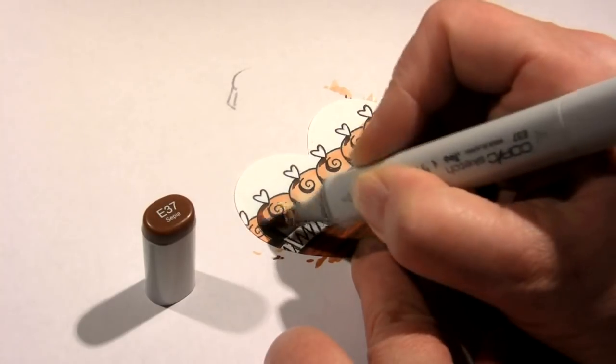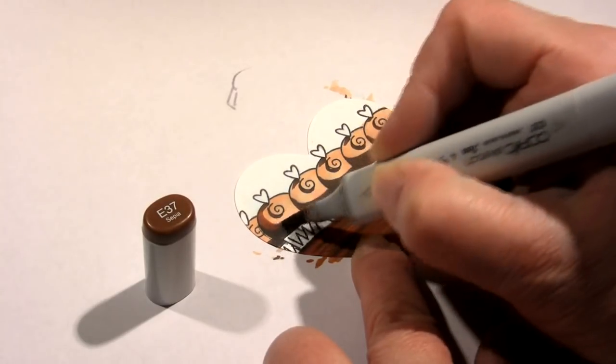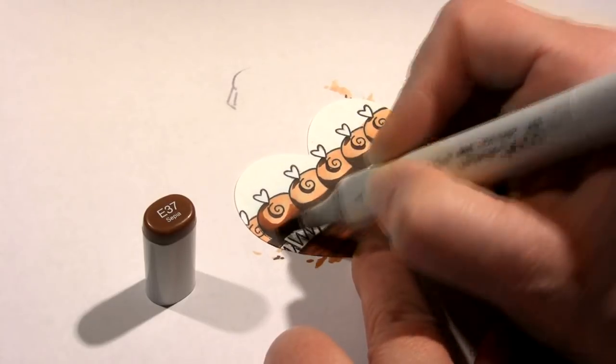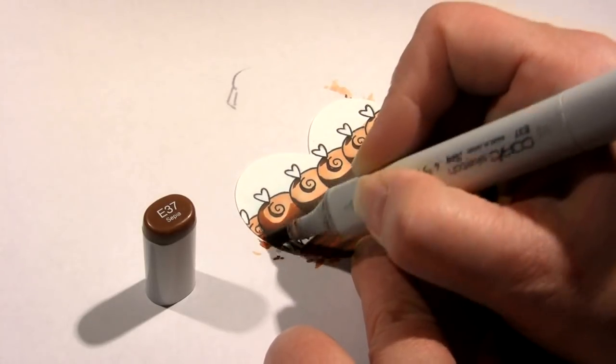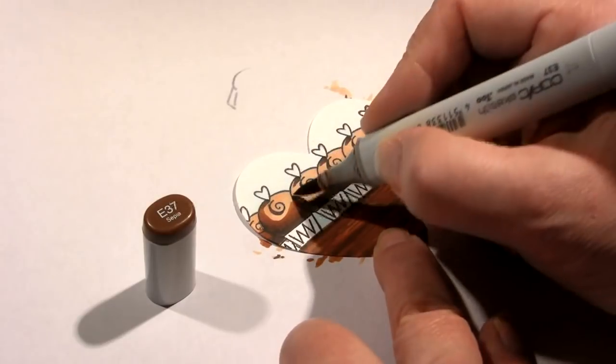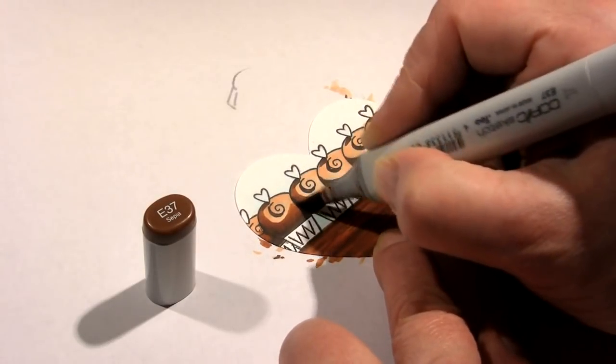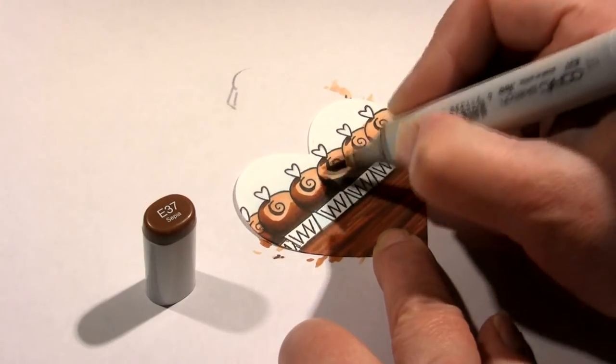E37 will be my next color, and I'm extending the shadow. I'm pulling up from where the shadow is and adding more of it into each of the truffles. I want to put enough of that color in there to make them nice and warm and chocolatey brown. This color is also going to blend and soften that E49 color, the really dark color, so that it has a really smooth blend to it.